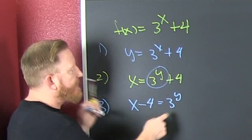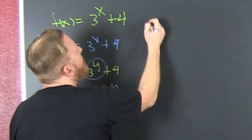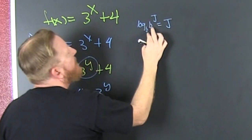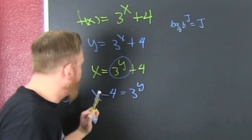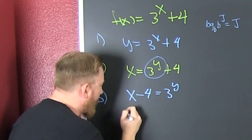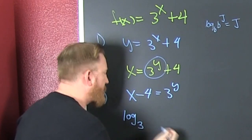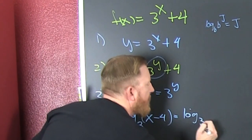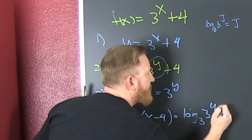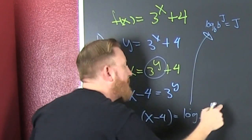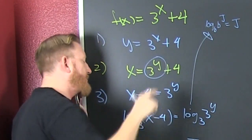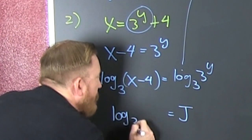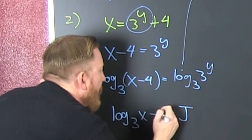We use log base three — because we're trying to get the bases to match. If we get log base b of b to the j, that turns out to be j. If the bases match, you get the exponent. So we take log base three of x minus four, which equals log base three of three to the y. And that gives us just y — log base three of x minus four.